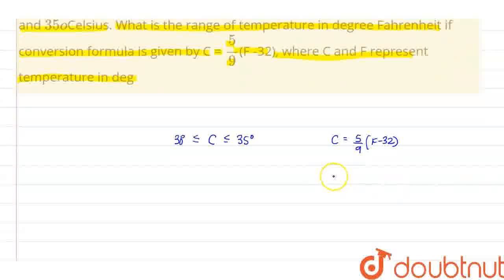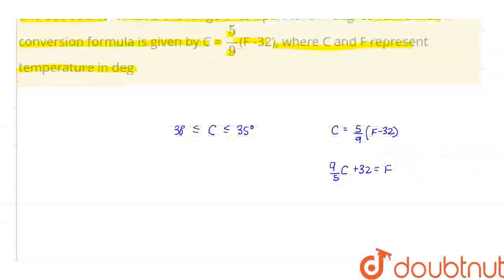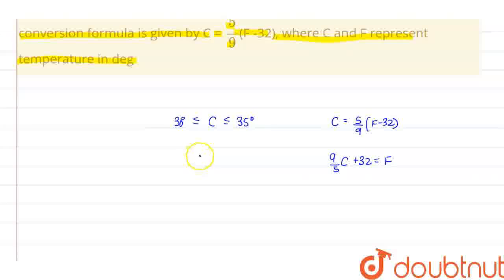So from here we can find the value of F in terms of C, which is 9 by 5 C plus 32 equals F. So now by converting this C in the form of 9 by 5 C plus 32, we get...